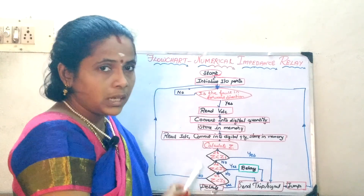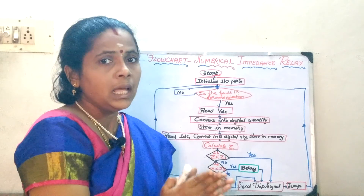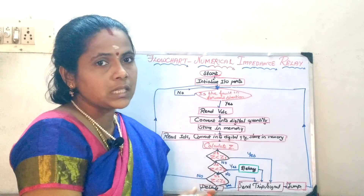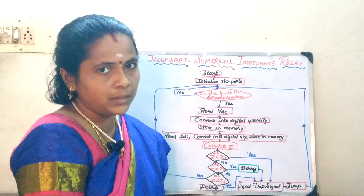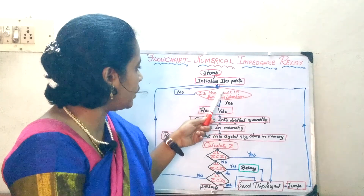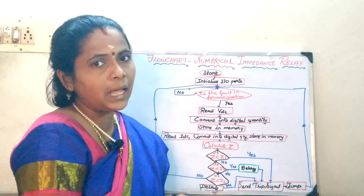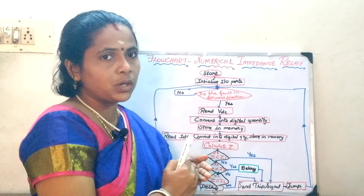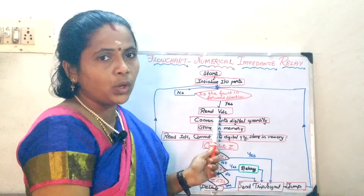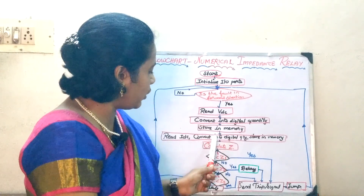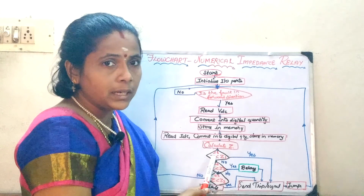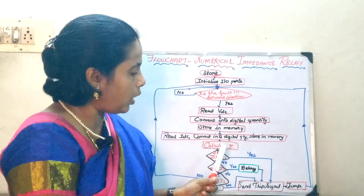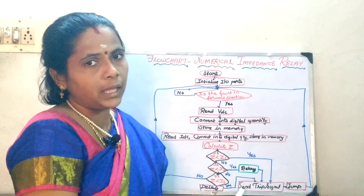Suppose these conditions do not occur — that is, only if there is a fault will the impedance be less than the required value, namely Z1, Z2, or Z3. If Z is going to be greater than Z3, it jumps back and checks whether the fault is in the forward direction and then proceeds. So we find the direction of the fault, proceed with VDC and IDC, check the V/I ratio, and if there is a fault, the fault impedance will be less than Z1, Z2, or Z3 accordingly, and the tripping action will be carried out.